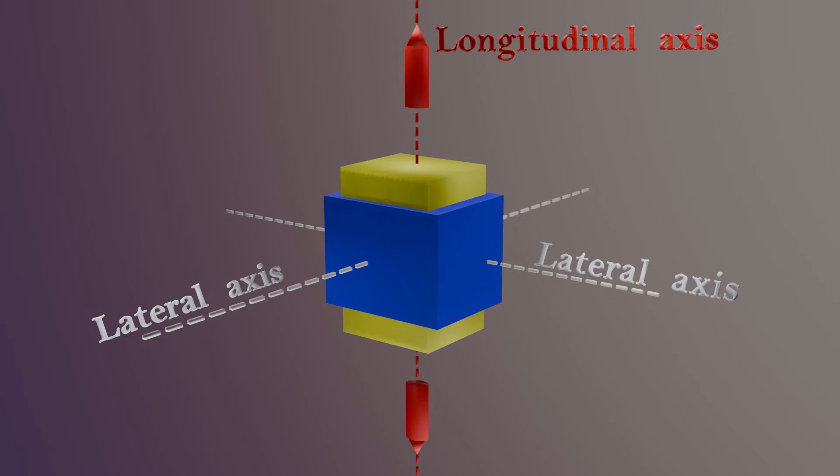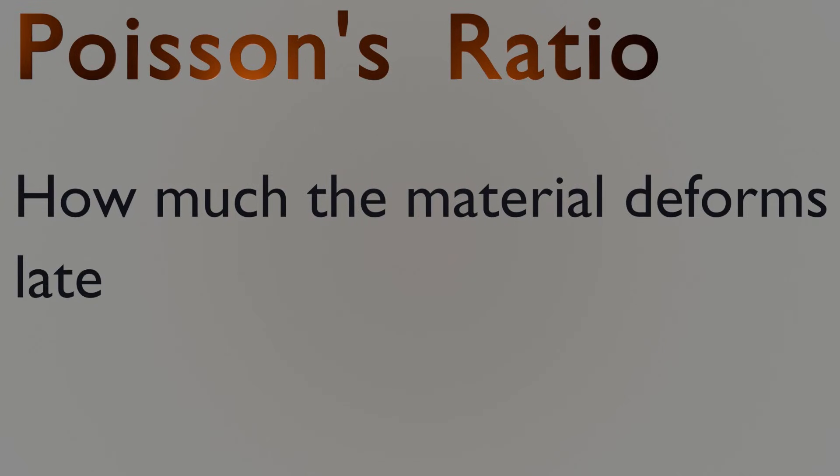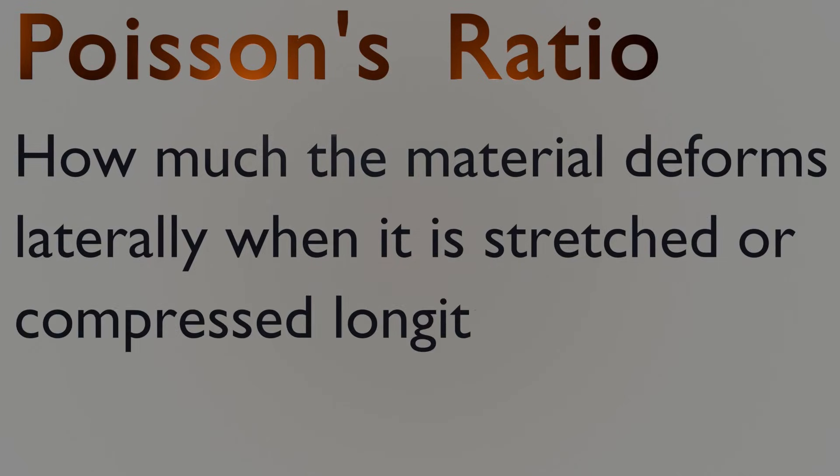This relationship is described by a parameter called the Poisson's ratio. Poisson's ratio tells us how much the material deforms laterally when it is stretched or compressed longitudinally.